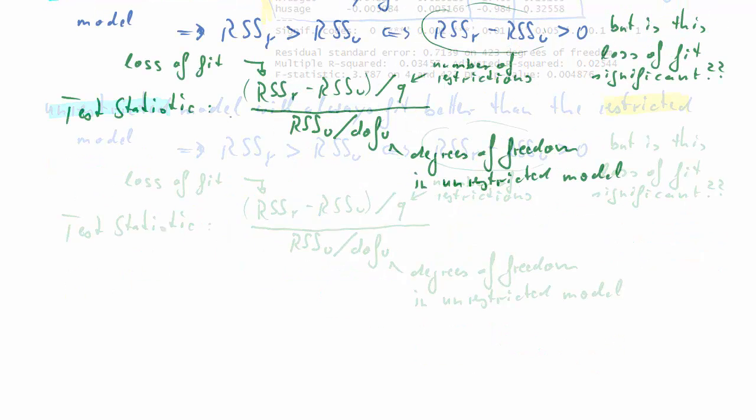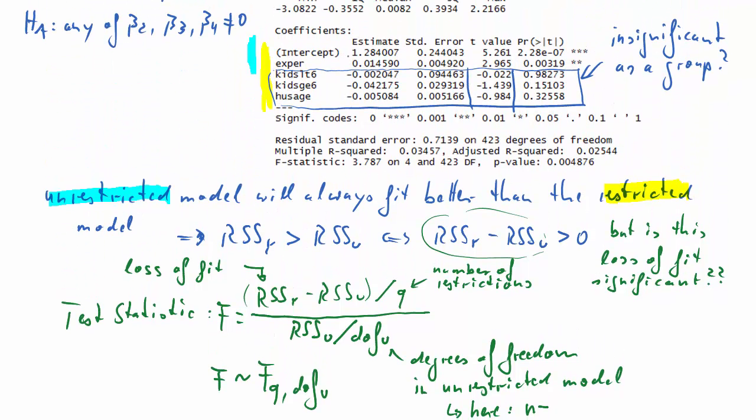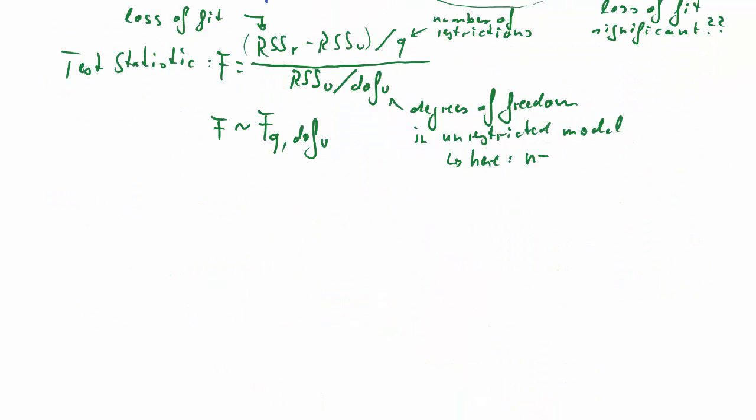This test statistic we call the F-test. So we'll give it the name F. Now, of course, we know if we do a hypothesis test, we need to know how it is distributed. And it turns out it is distributed with an F-distribution with Q and DOFU degrees of freedom. F-distributions have two degrees of freedoms. Now, the degrees of freedom of the unrestricted model, in our case, that is the number of observations minus how many coefficients are we estimating, 1, 2, 3, 4, 5. So the degrees of freedom of the unrestricted model is going to be N minus 5.